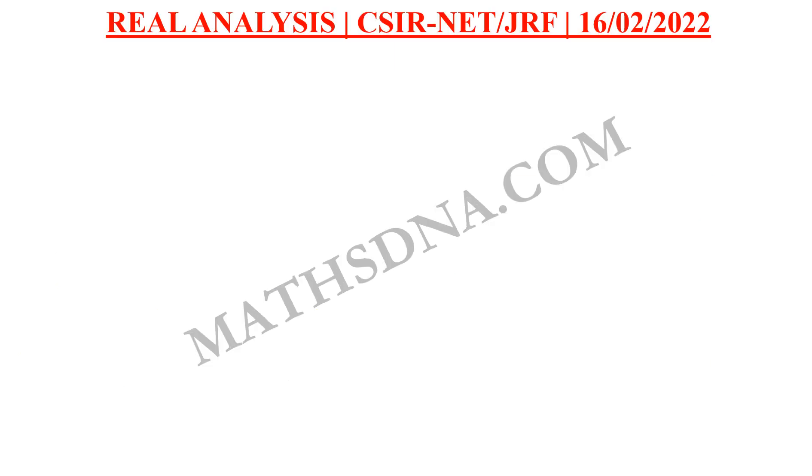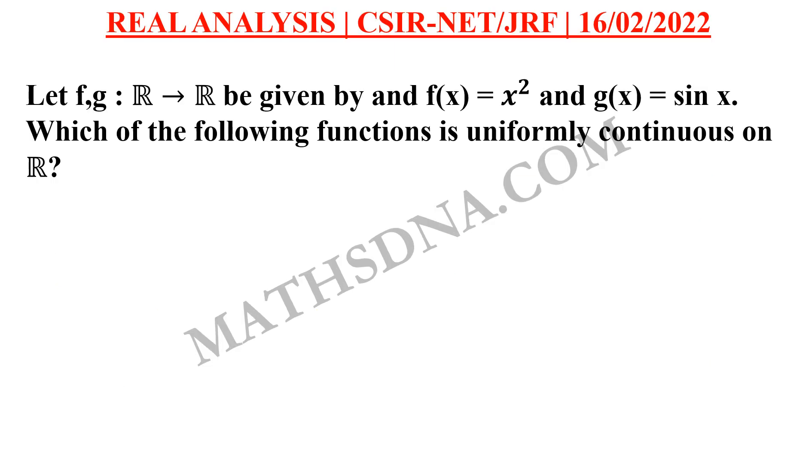Moving on to the question. The question is, let f,g: R → R be given by f(x) = x² and g(x) = sin x. Which of the following functions is uniformly continuous on R? That is the set of real numbers. The options are: